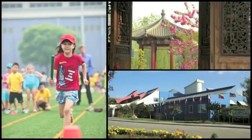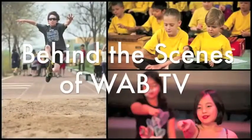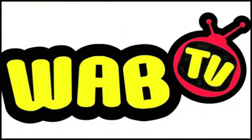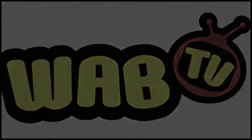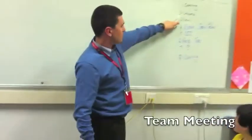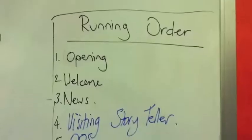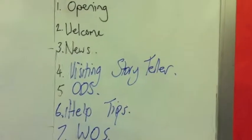Ever wondered what goes on behind the cameras of WAB TV? In this special edition, you'll get a rare glimpse into the work required to produce a show each week. Each week begins with a team meeting to decide on roles and who's doing what. We don't have much news this week — we've only got about three items — so our news segment won't be very long, and we have a spot for an extra segment.